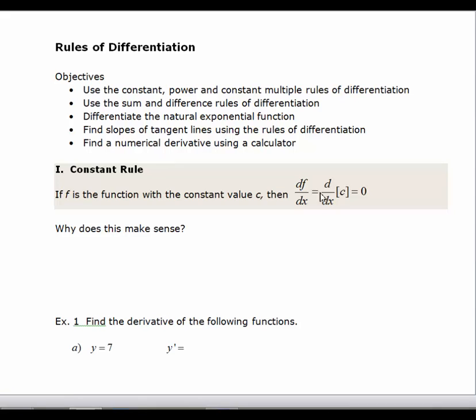Let's start with the constant rule. It is the most basic derivative and probably the easiest one to calculate. It basically says the derivative of a constant, d/dx of c, is equal to 0. So the question is, why does this make sense?